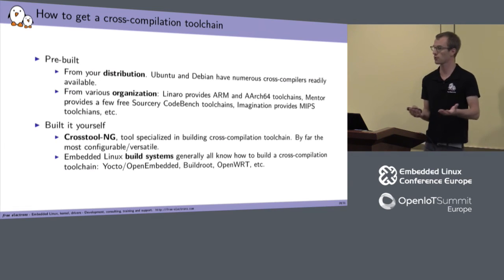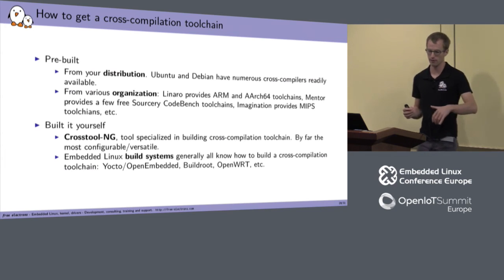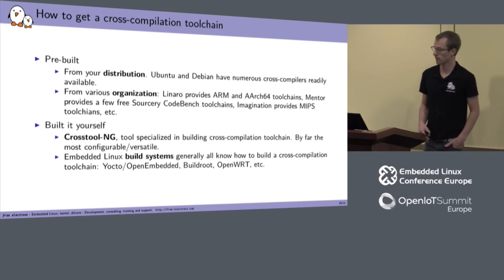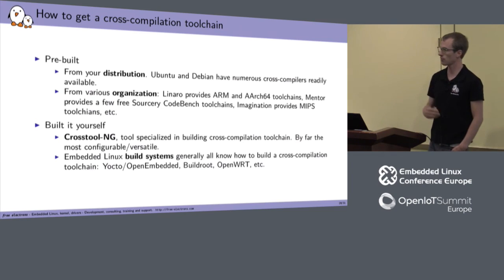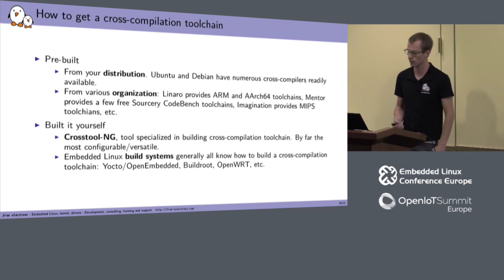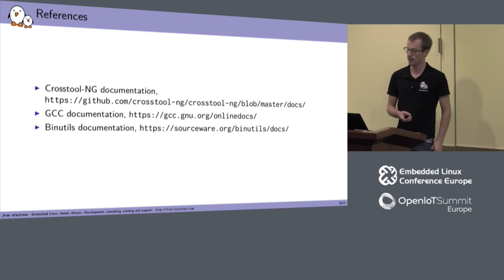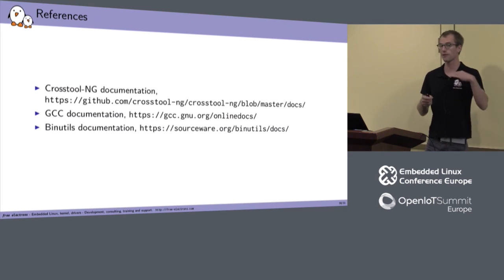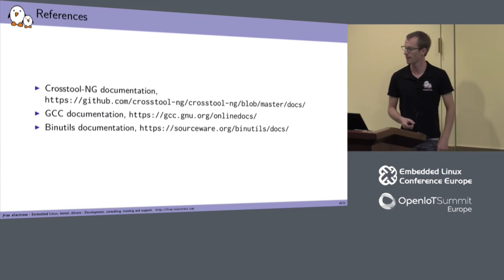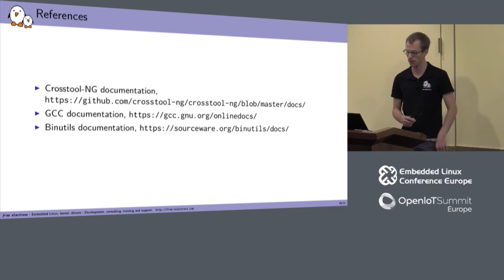CrossToolNG is probably the most configurable and versatile option and can produce toolchains targeting Windows systems and other situations. Embedded Linux build systems like Yocto/OpenEmbedded, Buildroot, and OpenWrt also know how to build a toolchain as part of the overall build process, and can often reuse existing pre-built vendor toolchains. CrossToolNG has great documentation on how a toolchain is constructed, even if you don't intend to use it. The GCC and Binutils documentation are also worth reading — they contain details on the GCC runtime and all the options available.